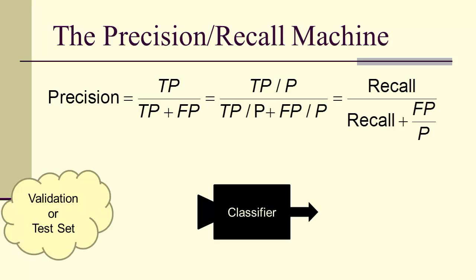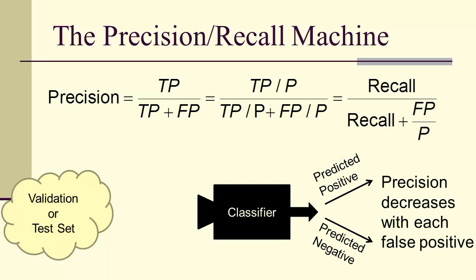For example, if we had in our test set or validation set some observation, it goes into our classifier, and it comes out as either positive or negative as a prediction. If we get a false positive, then that's going to cause the precision to decrease.